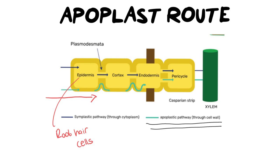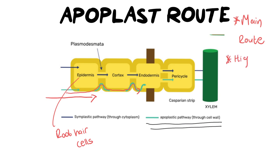Once water is in the epidermal tissue it is going to make its way through the various layers. This is the apoplastic route, which means it's going to move along the cell wall. This is the main route that water is going to take, especially when there is high transpiration.